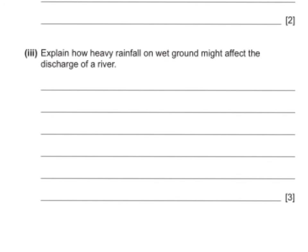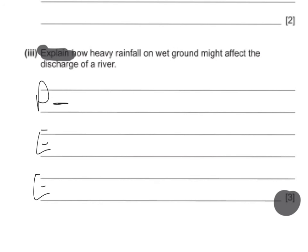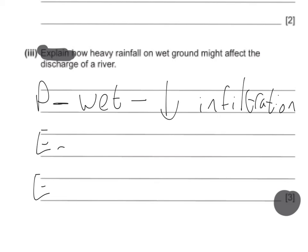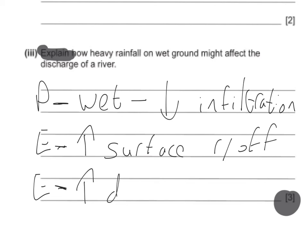You may also get a slightly more difficult question. This question uses 'explain' as a command word: how might heavy rainfall and wet ground affect the discharge of a river? Because this is an explain question worth three marks, I would expect you to use a point, explain, expand structure. Because the ground is already wet, that reduces the rate of infiltration — basically the soil is full of water, so any fresh precipitation can't make its way into the soil. If it's not making its way into the soil, that must therefore increase the rate of surface runoff, either directly into the sea or into a river. In this case, the final point is that it would increase the discharge of the river.